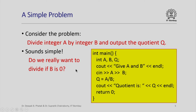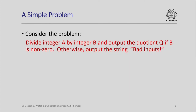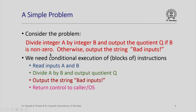So do we really want to divide if b is 0? We need to reformulate the problem: divide a by b and output the quotient q if b is non-zero; otherwise, if b is 0, simply output the string "bad inputs" because the division would be undefined. As you can see, we need conditional execution of instructions in order to solve even a simple problem like this.